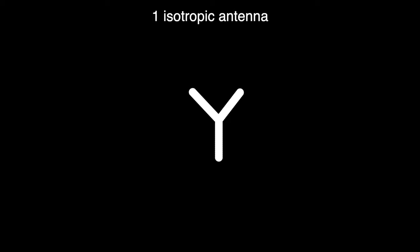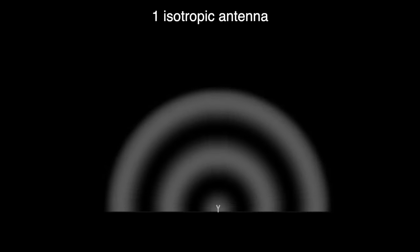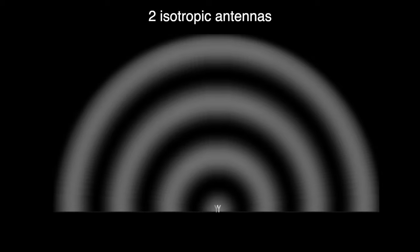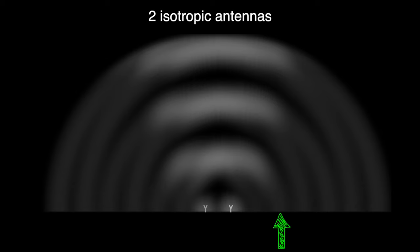Let's go back to our single isotropic antenna and look at half of the pattern. The antenna is radiating out a sine wave, where the dark lines are where the signal is high and the light lines are where the signal is low. This antenna has no directivity since it radiates equally in all directions. But imagine we have a second antenna placed half a wavelength away, also radiating the exact same sine wave. Along the horizontal axis, the two waves are exactly out of phase, since the light part of one overlaps with the dark part of the other. When one signal is high, the other is low, and when we combine those two signals, they cancel out, leaving very little energy in these directions.